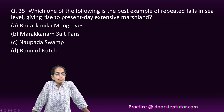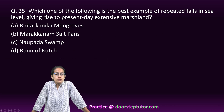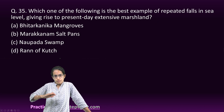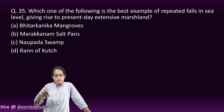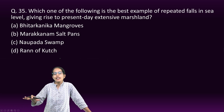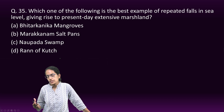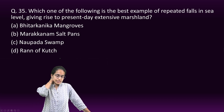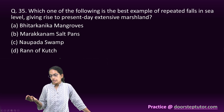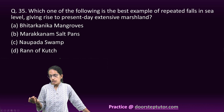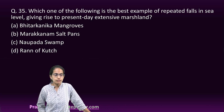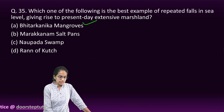The next question is about Bhitarkanika mangroves. These mangroves are a classic example of the impact of falling sea levels, which created marshland. Studies on the relationship between mangroves and sea level changes have been conducted at major river deltas including the Nile, Amazon, Ganga, Yangtze, and Mississippi, and Bhitarkanika is one of the classic examples cited.